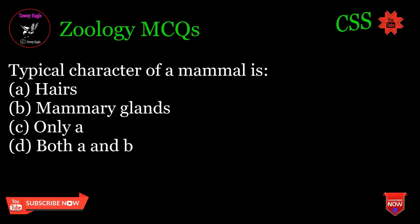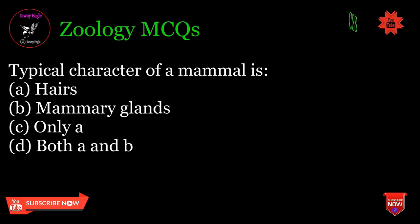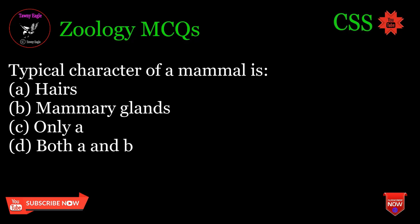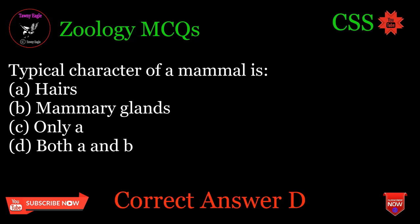Typical characters of a mammal are: A. Hairs, B. Mammary glands, C. Only A, D. Both A and B. Correct answer: D.